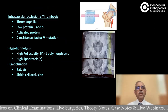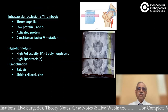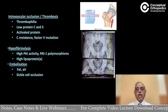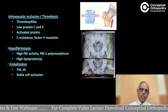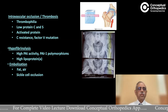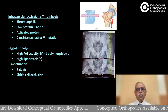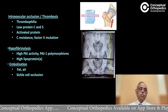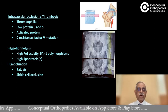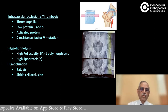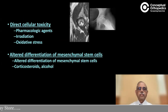Other causes include intravascular occlusion from thrombophilia, low protein C/S, activated protein C resistance, and Factor V mutation. Hypofibrinolysis causes include high PAI activity, PAI polymorphisms, and high lipoprotein(a). Embolization can occur due to fat, air, or sickle cell occlusion. These are in short the different causes of avascular necrosis of the head of the femur, and we now move on to direct cellular toxicity.